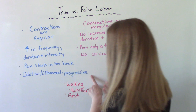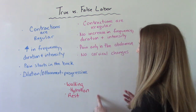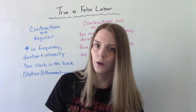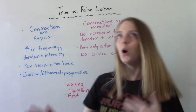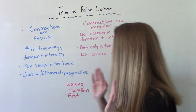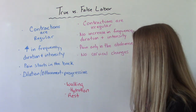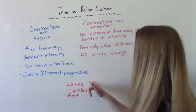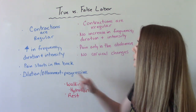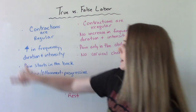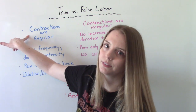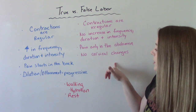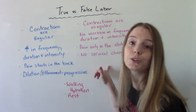If you're at home and you haven't been checked out yet and you're not sure whether to go to the hospital, there are a couple of things you can try. Try walking — ambulating. If you're in true labor, this will make the contractions stronger. If you're in false labor, walking might actually make the contractions go away.